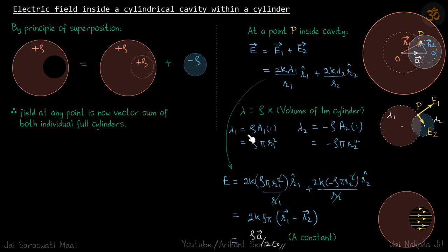We put the values of lambda 1 and lambda 2 here because we want to find the field. One of the r1 will get cancelled, one r2 will get cancelled, and if you take the common terms out you will get 2k rho pi times r1 vector minus r2 vector. You can see r1 vector minus r2 vector is A vector.